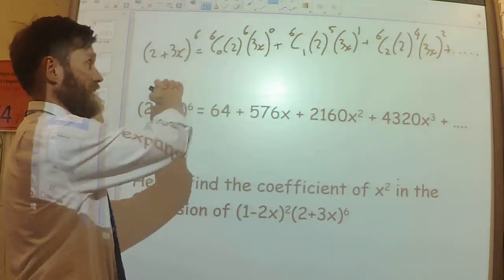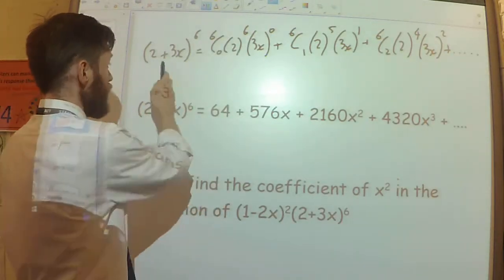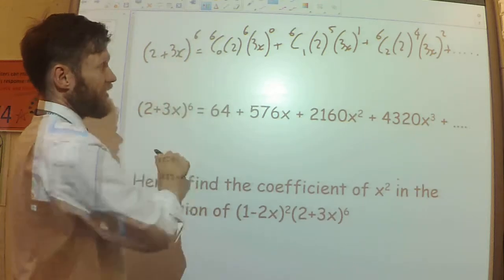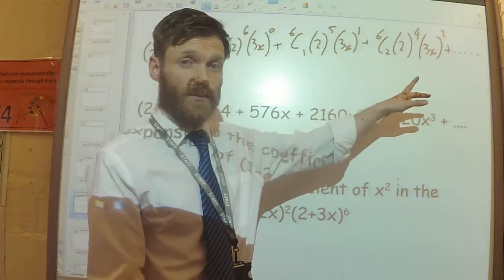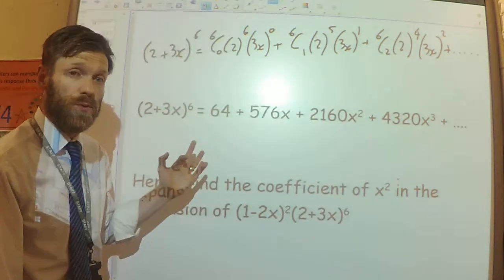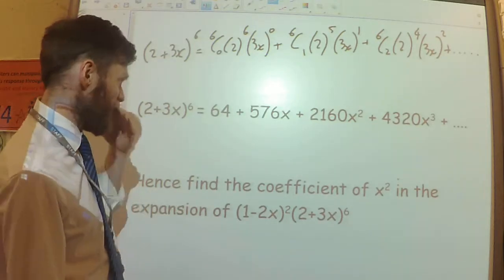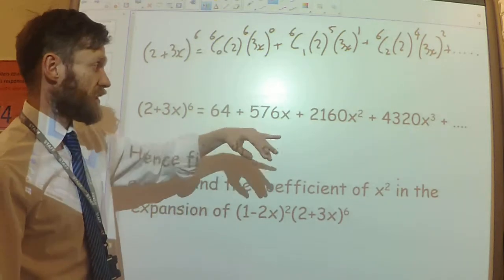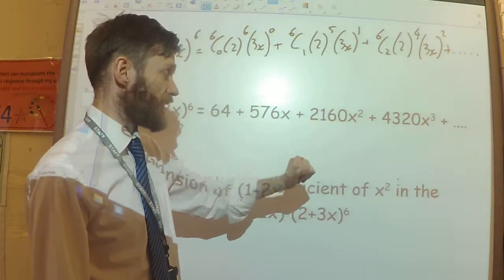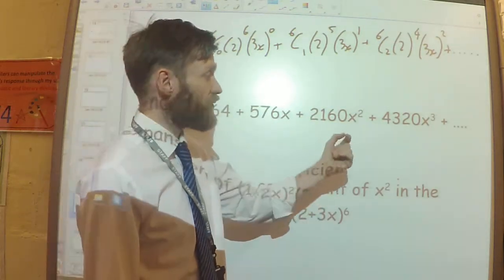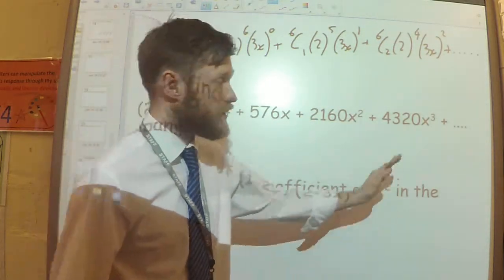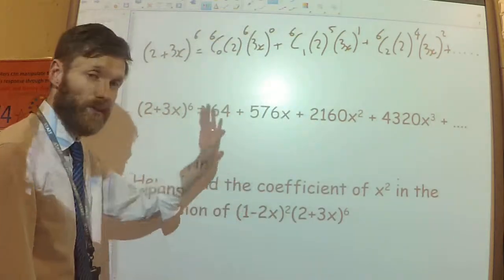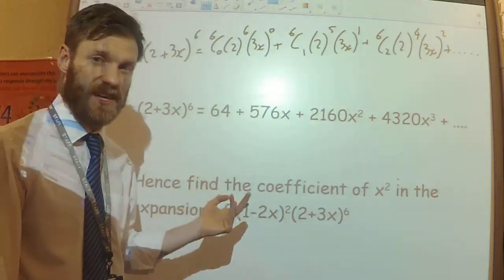I have already expanded a binomial. I've got 2 plus 3x to the power 6. There's my working out for expanding it. And when I work out each of the individual terms, I get 64 plus 576x plus 2160x squared plus 4320x cubed and so on. I've already worked that out in part A of the question.